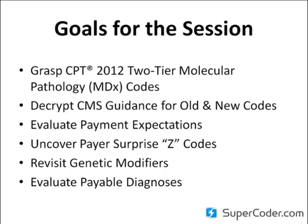I also want to talk about genetic modifiers, because prior to these new two-tier coding systems, that was supposed to be a way that labs could identify what variant they were testing for when using the stacking codes, and that was crucial for payment for some payers. I want to talk about how those fit into the new paradigm, and then finally I want to talk about coverage issues, payable diagnoses, and what kinds of coverage determinations are out there.